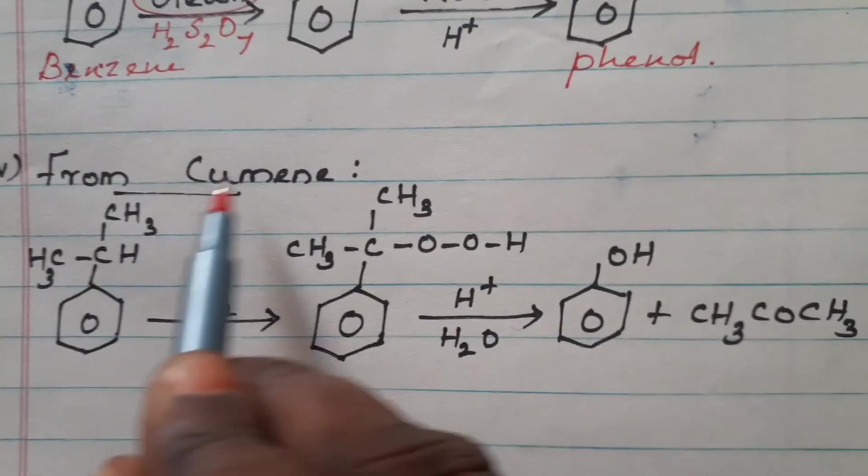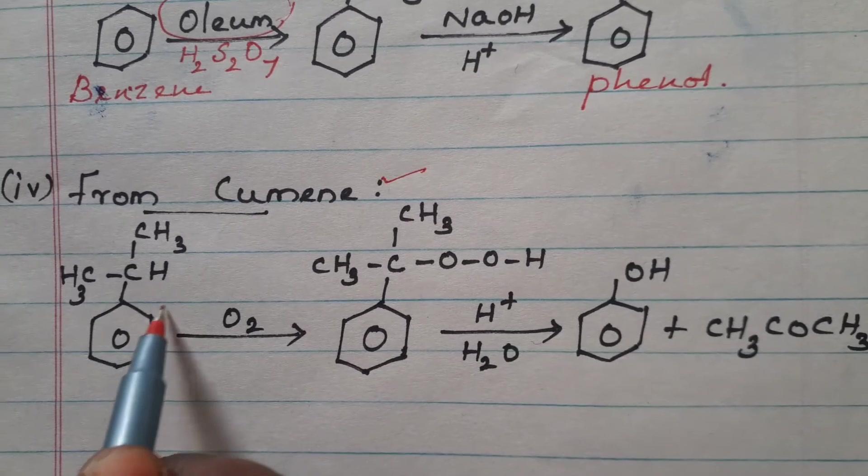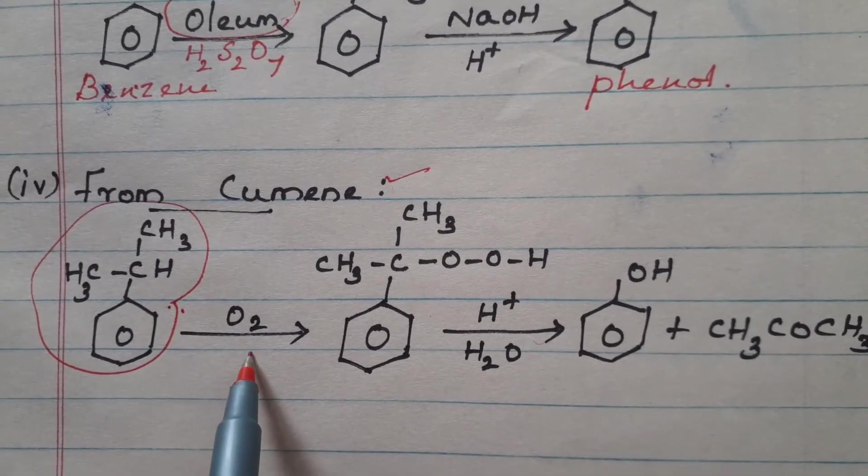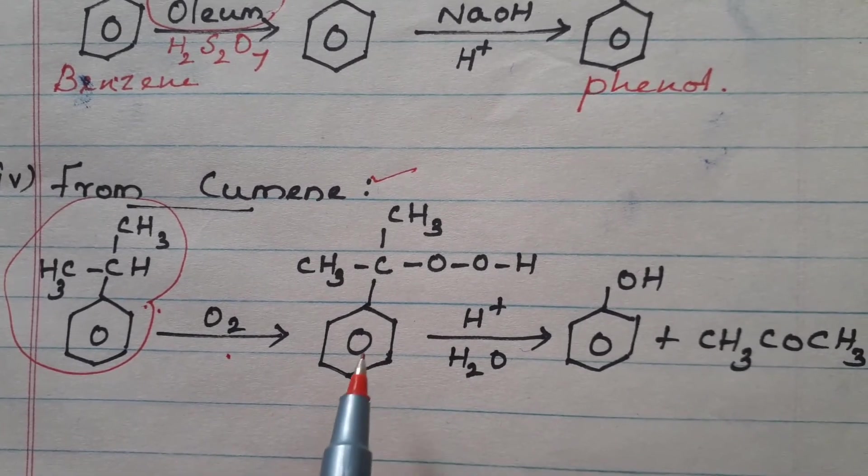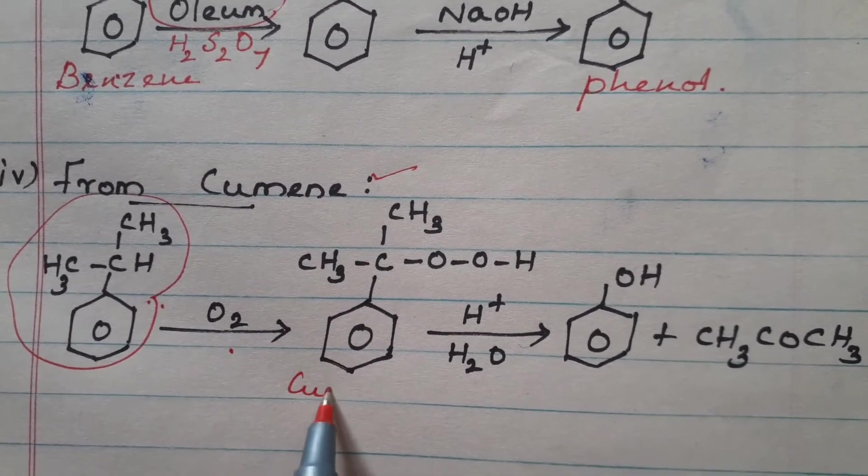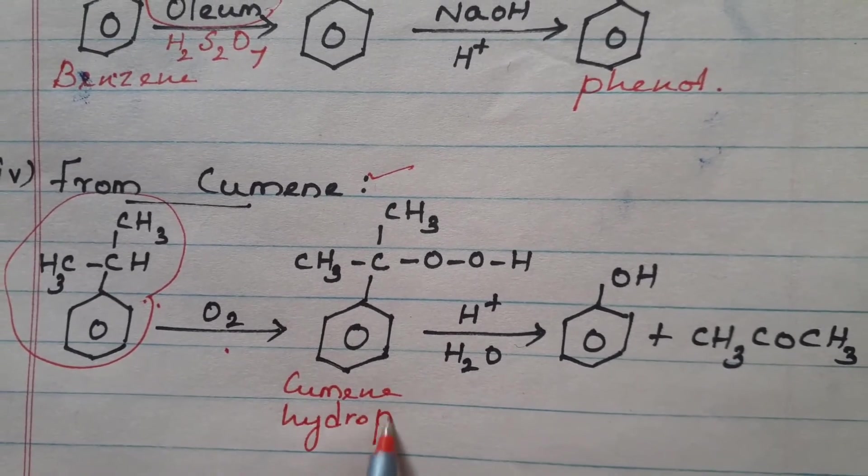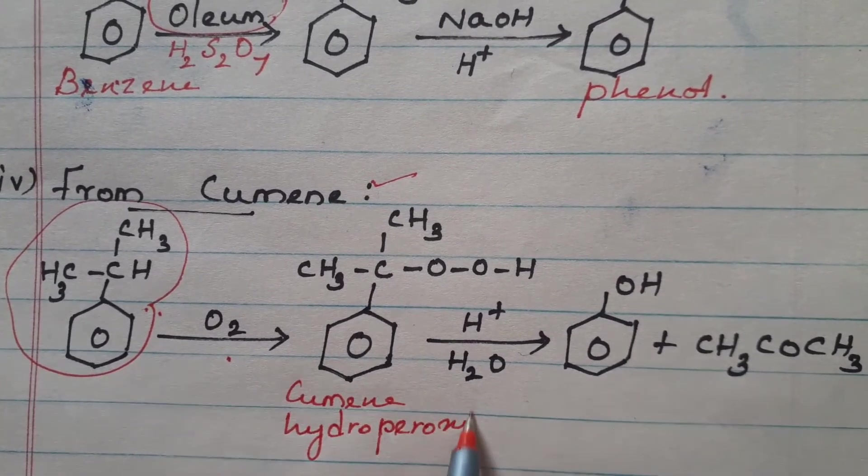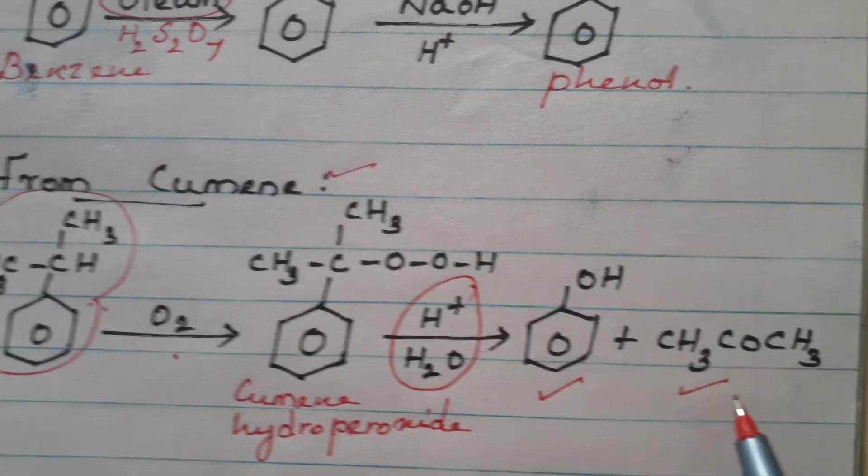At last, we are going to see the preparation of phenol from cumene. This is the formula for cumene. This cumene on oxidation will produce cumene hydroperoxide. This, on acid hydrolysis, produces phenol plus acetone. Thank you children.